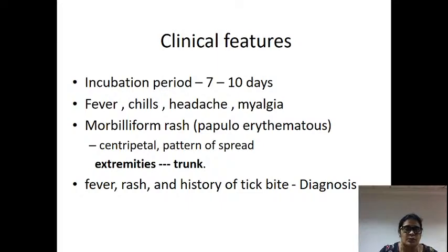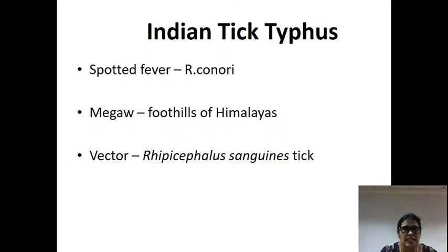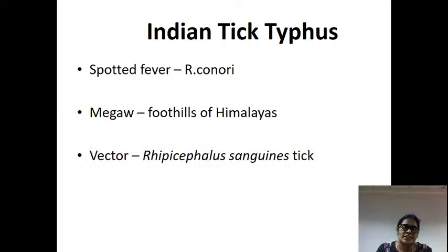Rocky Mountain spotted fever: the rash spreads from extremities to the trunk — centripetal distribution. There is fever with a typical tick bite eschar. Rickettsia rickettsii causes Rocky Mountain spotted fever, which is transmitted by the tick. What about the Indian tick typhus? It is present in North India. Rickettsia conorii causes Indian tick typhus, which is also present all over India.